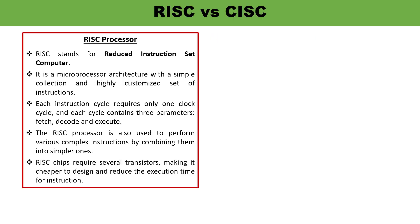What is a RISC processor? The term RISC stands for Reduced Instruction Set Computers. You must remember this. Reduced Instruction Set Computers means it has a very customized set of instructions. Each instruction cycle requires one clock cycle, and there are three parameters in every cycle: fetch, decode, and execute. RISC processors are very simple processors, capable of performing simple operations.